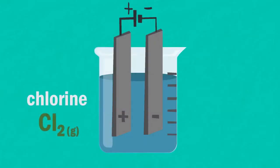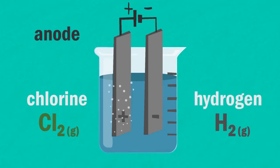The chlorine is formed at the anode, that's the positive electrode, and the hydrogen is formed at the cathode, that's the negative electrode. Did you get it right?